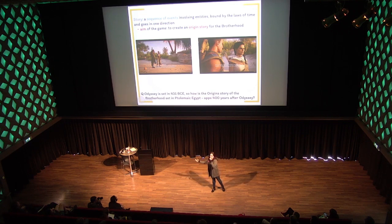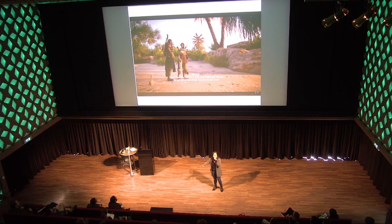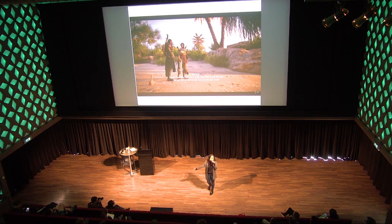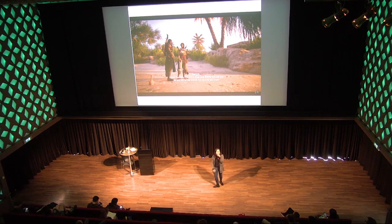Do you guys know who they are? They are Aya and Bayek — you can guess who's female and male. Bayek is basically telling Aya that Egypt has fallen, Rome has fallen. By the way, if you haven't played this game and intend to, I'm spoiling it for you completely. Sorry, I should have said that earlier.